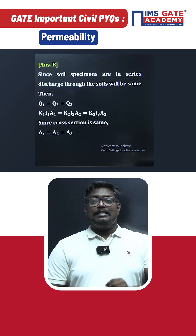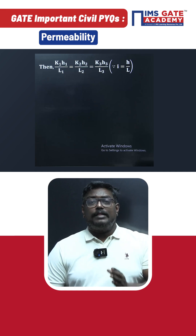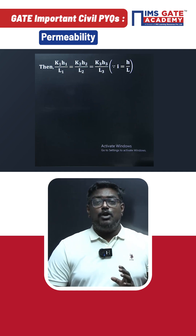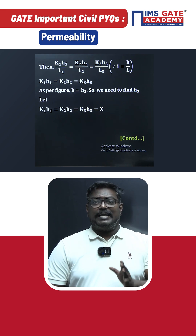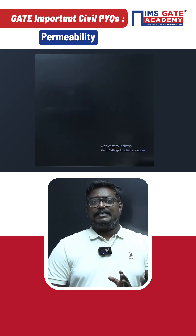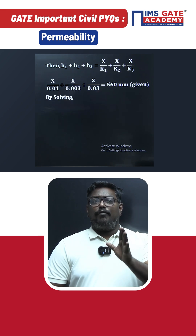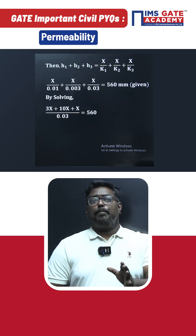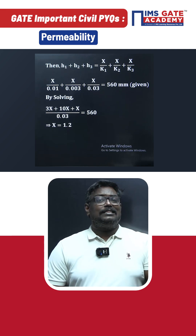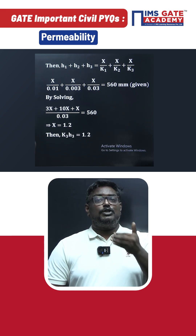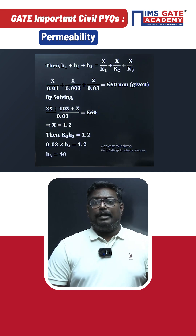By substituting the values of the coefficients of permeability, and knowing that the summation of all individual heads equals 560 mm — that is, h1 + h2 + h3 = 560 mm — on substituting these values you get x = 1.2. Then substituting x = 1.2 into h3k3 = x, and using k3 = 0.03, you get h3 = 40 mm.